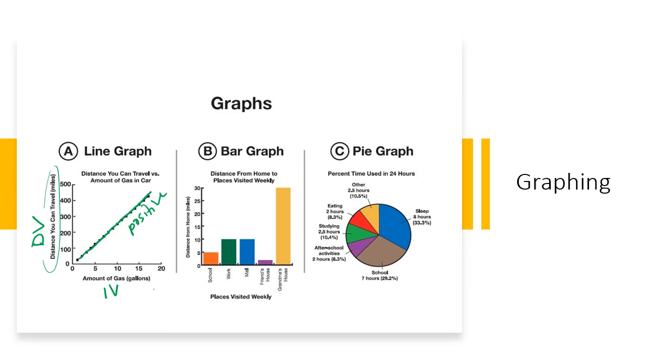Alright. A bar graph in general used to compare, make general comparisons between items. So distance from home to places visited weekly. So you can see here each of your places visited weekly, their distance from home. And then a pie chart is used to make a comparison like a percentage or a whole. So how much of something is that? So this is percent of time used in 24 hours. We're going to look at some bar graphs about like the composition of the atmosphere or what the ground is mostly made of, things like that. So keep these in your head moving forward because we're going to revisit them often.